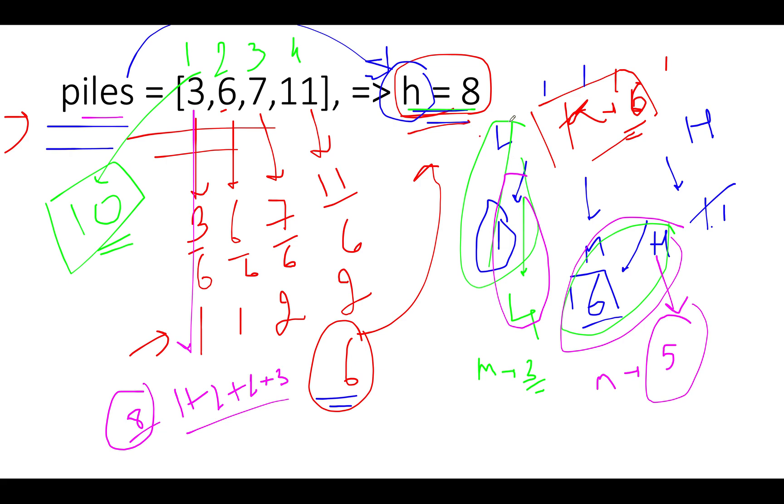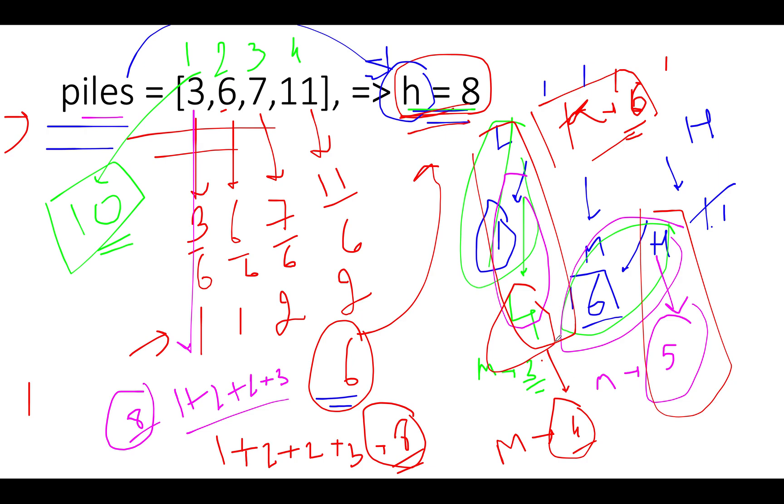And now we have low at 4 and high at 5. Let's recalculate the middle pointer. The middle turns out to be 4, and corresponding to 4 let's calculate the number of hours it takes. So 3 by 4 corresponds to 1 plus 6 by 4 corresponds to 2 plus 7 by 4 corresponds to 2 plus 11 by 4 corresponds to 3. Again it turns out to be 8, and what do we do in such case? We decrement the high pointer to mid. High gets updated to 4, low is also pointing to 4, high is also pointing to 4. The loop aborts and we say that 4 is a minimum possible value.